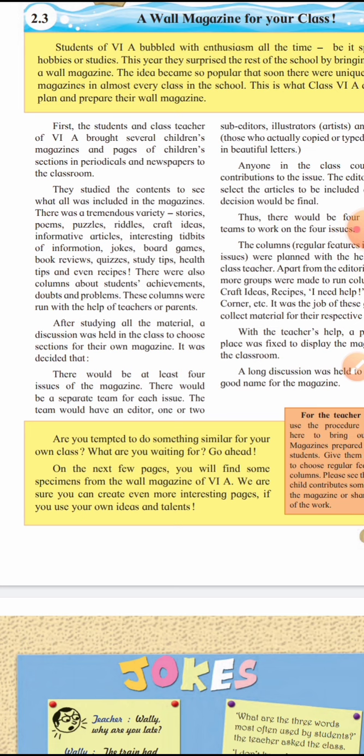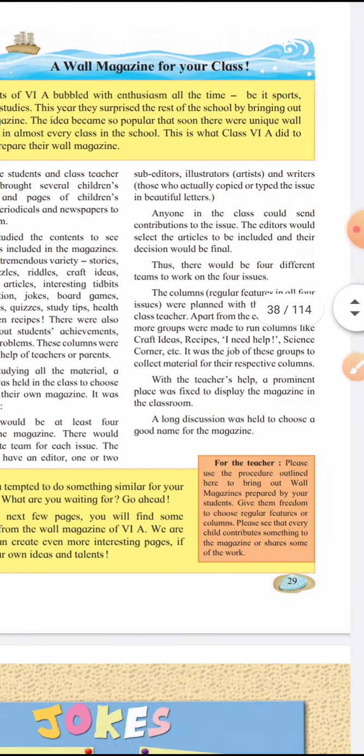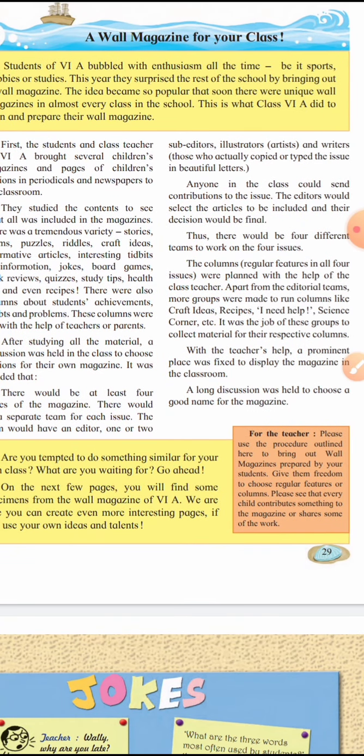After studying all the material, the discussion was held in class to choose sections for their own magazine. It was decided that there would be at least four issues of the magazine. There would be a separate team for each issue. The team would have an editor, one or two sub-editors, an illustrator — meaning an artist — and a writer. You read the newspaper cuttings, then draw and write the content on chart paper to prepare a beautiful magazine.